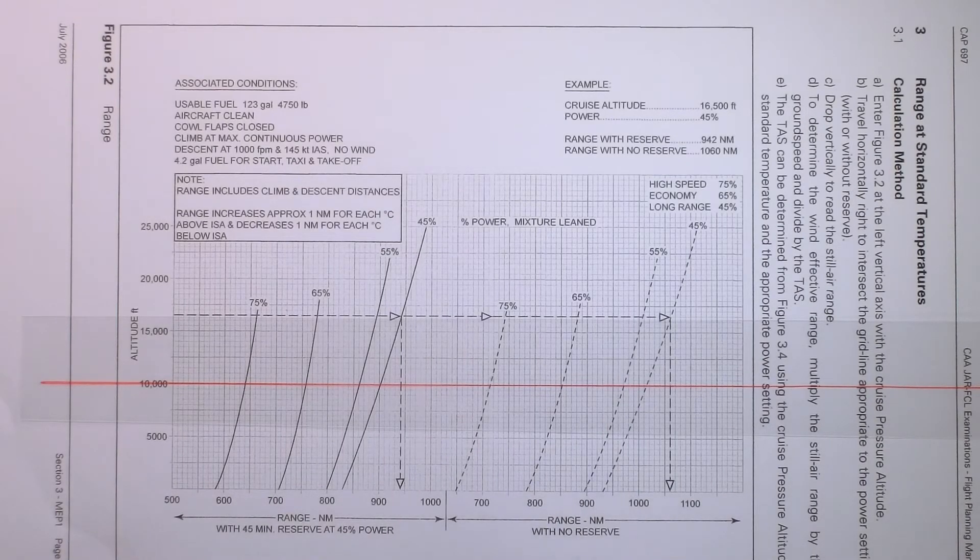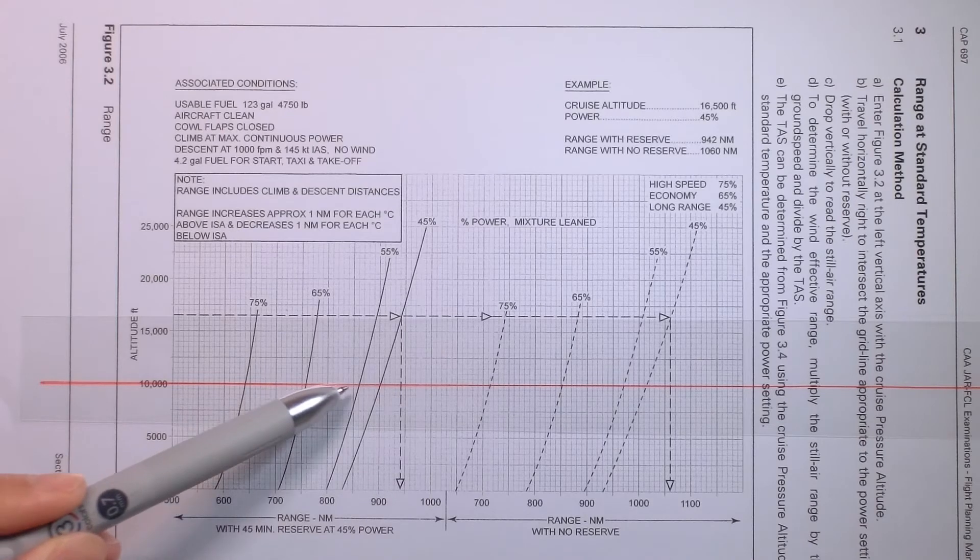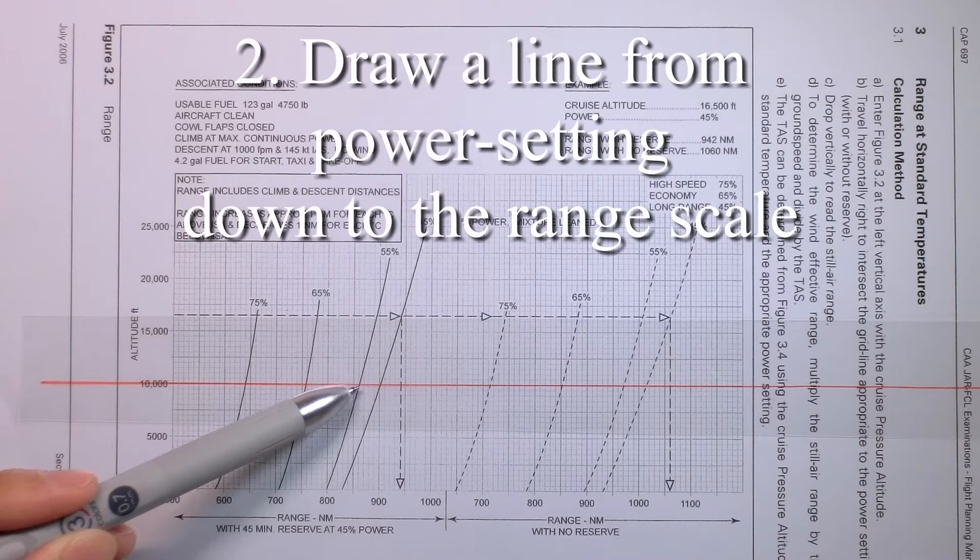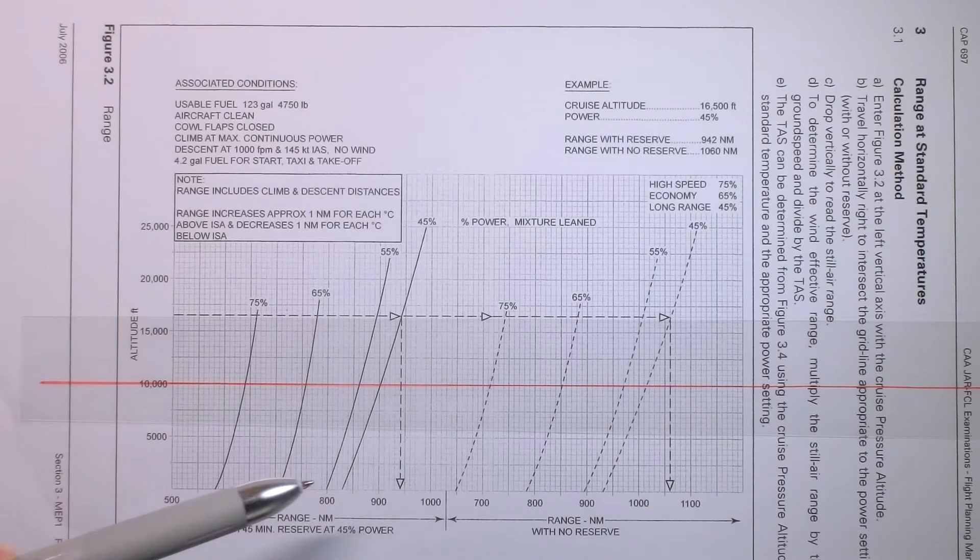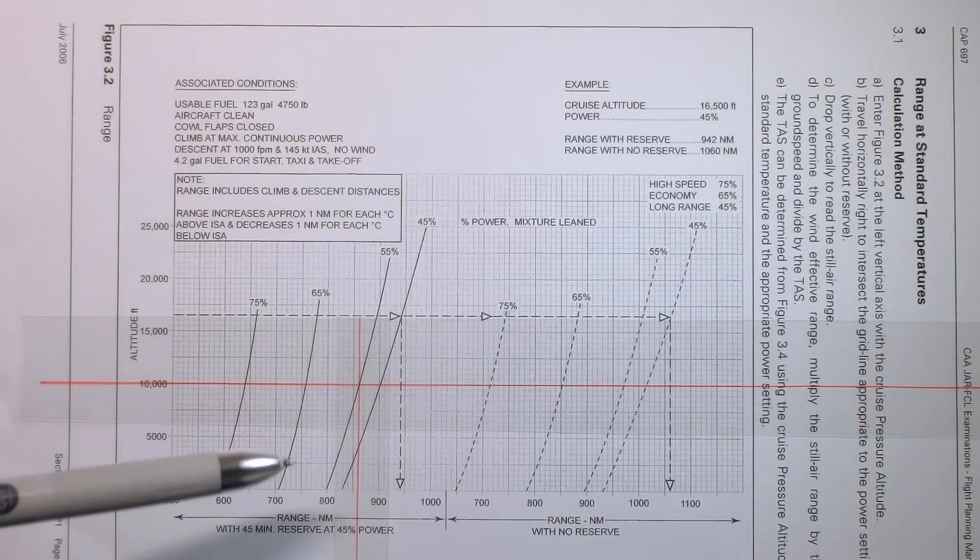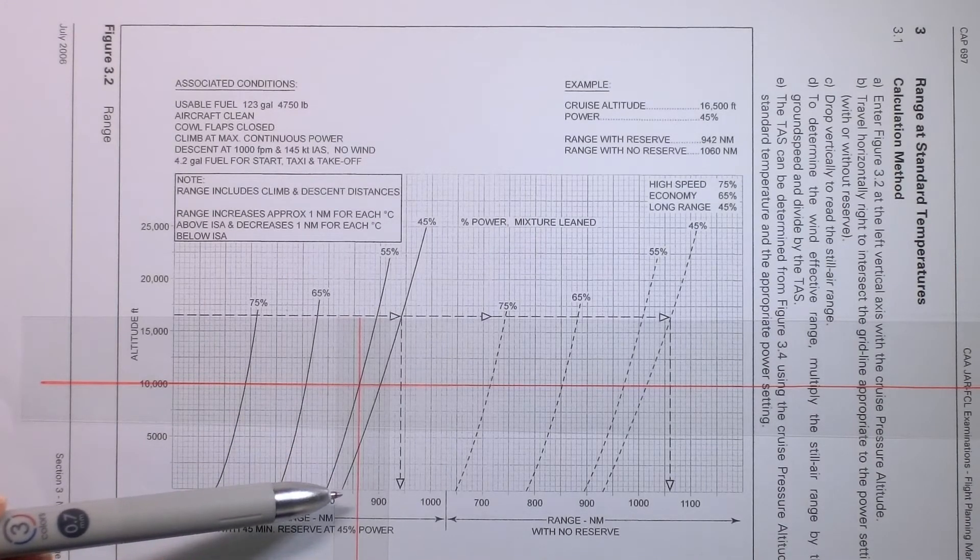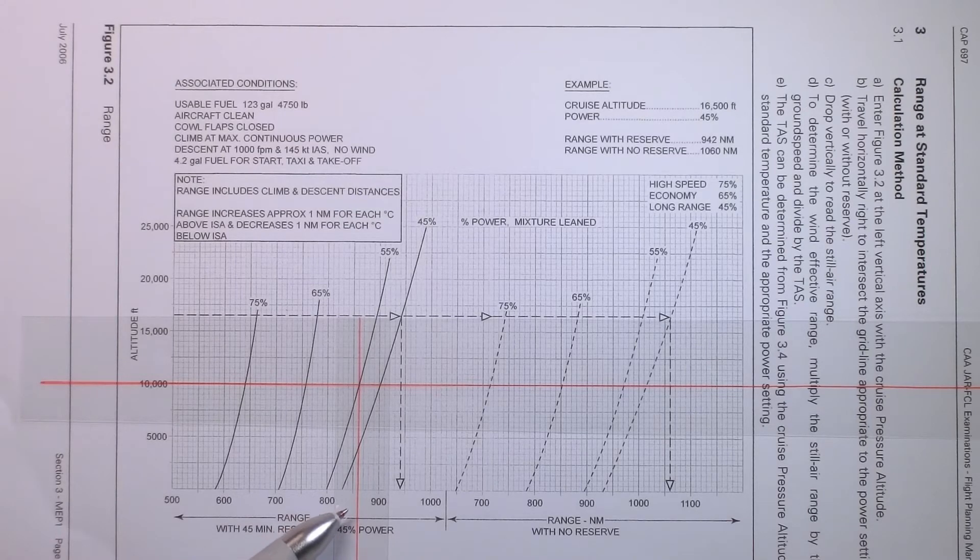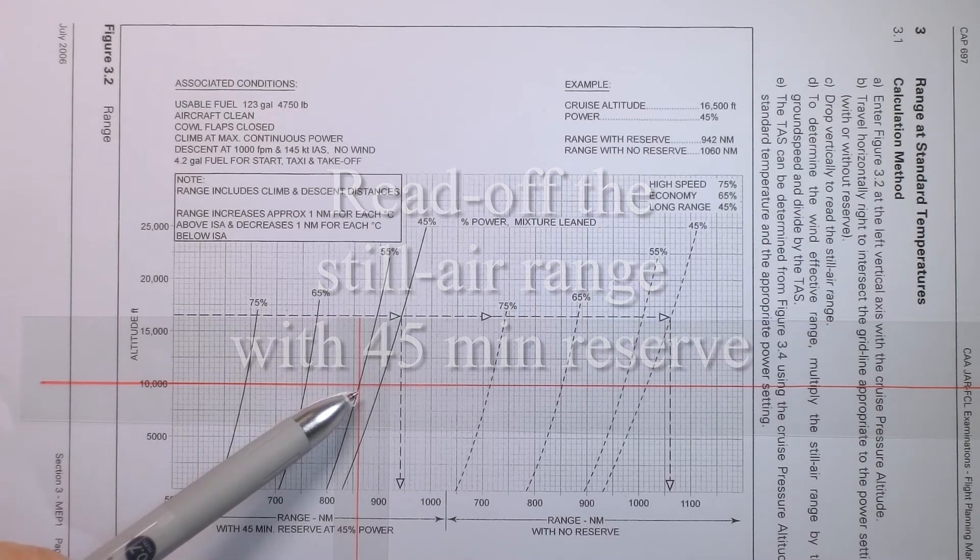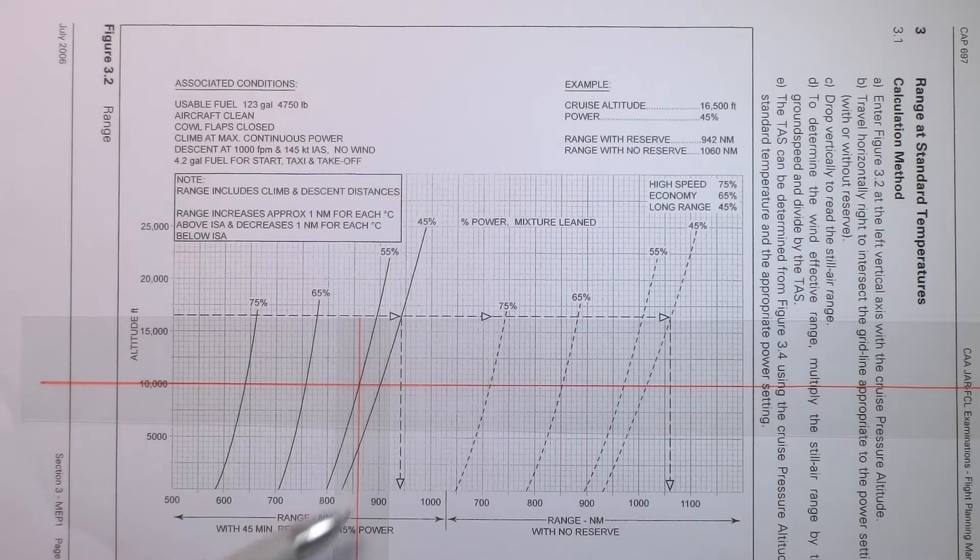Now we said we're going to cruise at 55% power. So we'll follow this line across until we reach 55%. And then where our 10,000 feet line intersects 55%, we'll draw a straight line right down to the range scale to read off our range with 45 minutes of reserve. And it should look something like this. Reading off the range scale at the bottom, we'll see that our still air range at 10,000 feet with a power setting of 55% is 850, 860 nautical miles. And that gives us 860 nautical miles with 45 minutes reserve at 45% power.